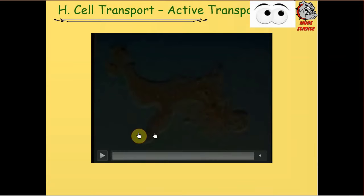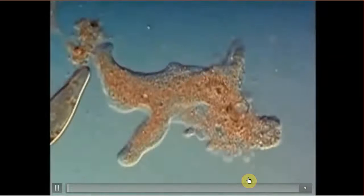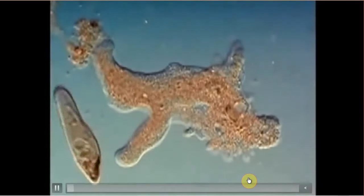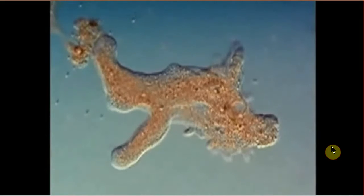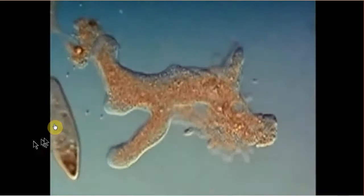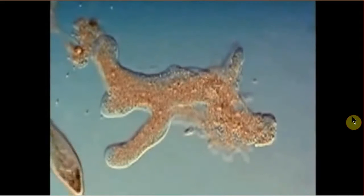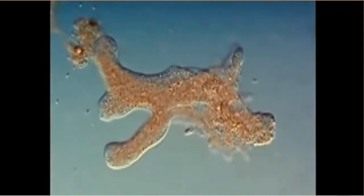We're going to take a look at a couple of short videos on this. We have active transport here. And so we have this amoeba. This is probably in the neighborhood of 500 times magnification. And this is the amoeba in the center here. And we have a paramecium over here on the left. And we're going to watch what happens with the paramecium.